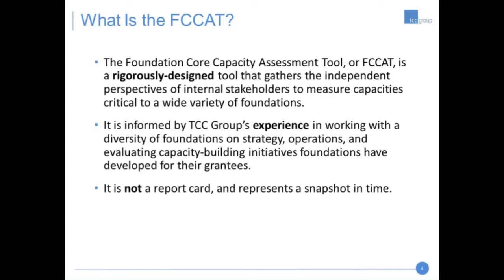The FCAT allows foundations to gauge their capacity in a variety of areas. The primary categories include: leadership capacity — the ability of foundation leaders to create and sustain the foundation's vision, to innovate, and to provide direction to advance organizational mission; adaptive capacity, which reflects the foundation's ability to monitor, assess, and respond to internal and external changes; management capacity, which is about the foundation's ability to ensure effective and efficient use of organizational resources; and technical capacity, which is the ability of the foundation to implement key organizational and programmatic functions. The FCAT also measures some capacities related to organizational culture.